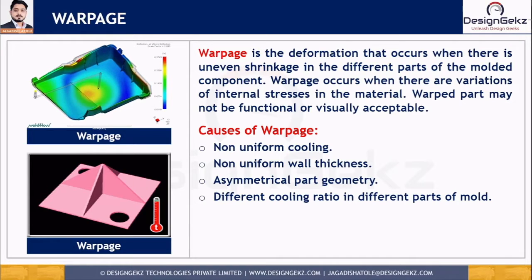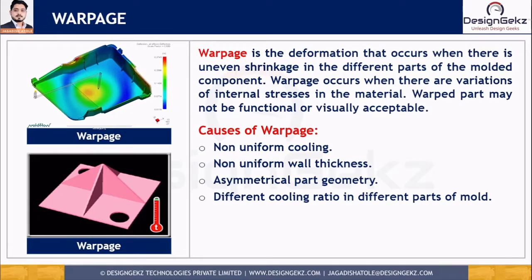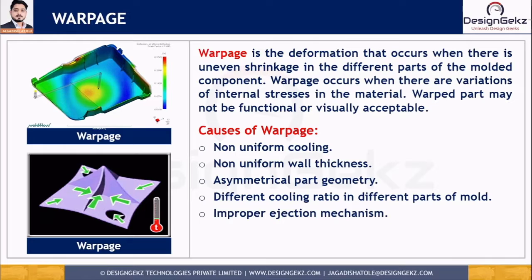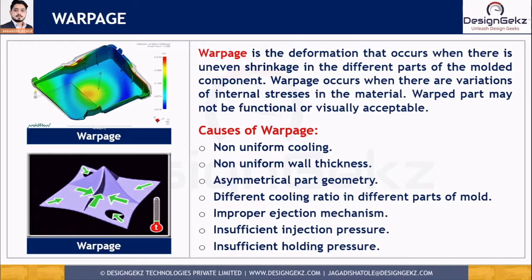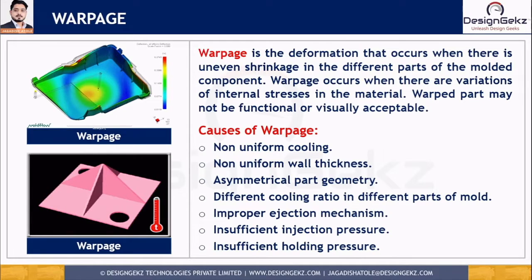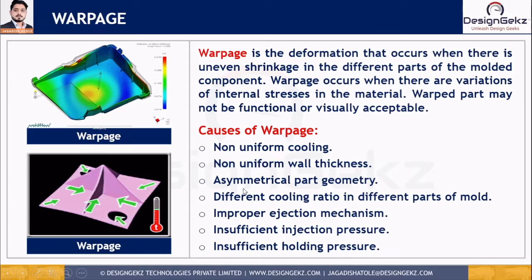These internal stresses, when released, tend to cause warpage. Warpage can also be caused by improper ejection mechanism during ejection of the part from the mold. Insufficient injection pressure and insufficient holding pressure also lead to warpage. As a design engineer, though we are not directly responsible for factors like insufficient holding pressure, injection pressure, or different cooling ratios, we can avoid the defect by maintaining uniform thickness and designing stiffening profiles.